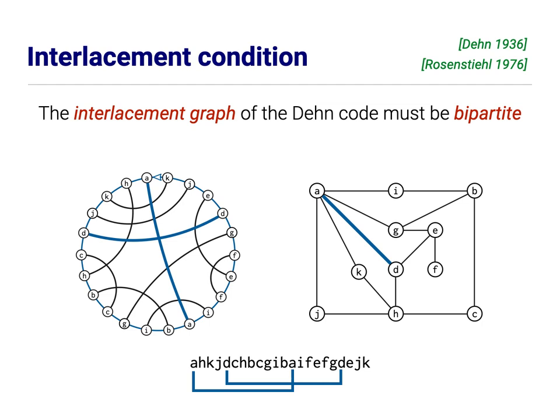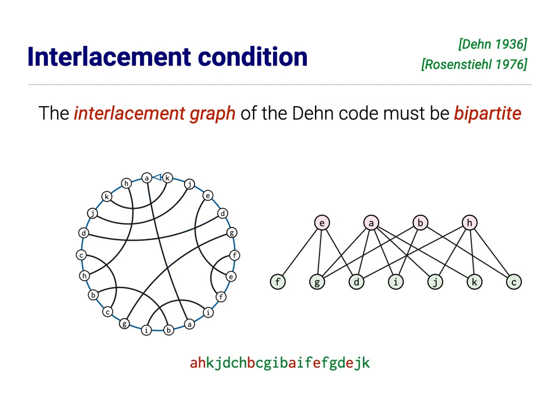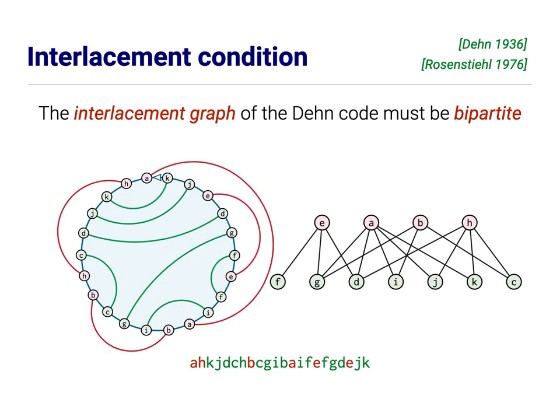So we need to somehow take the arcs of the interlacement graph and divide them into two classes, the ones that we want to draw on the inside of the circle and the ones that we want to draw on the outside of the circle. These correspond to interior and exterior self-tangencies, respectively. And the one thing we know is that if two of these arcs are interlaced, they must be on opposite sides of the circle. They must, one, be interior and the other exterior. And so this naturally defines what we call the interlacement graph. You have one node for every symbol, and you have an edge between two symbols, if and only if the arcs in the Gauss diagram are interlaced, or that pair of symbols is interlaced in the Dehn code. In this case, A and D are connected because those symbols appear A, D, A, D in the Dehn code, as opposed to A, A, D, D, or A, D, D, A. They're interlaced.